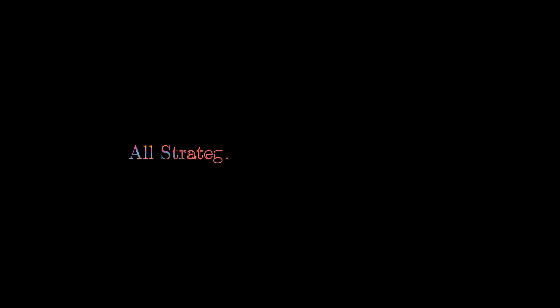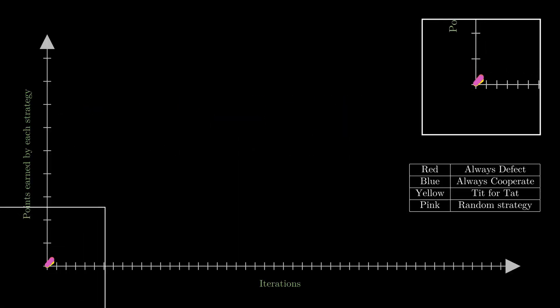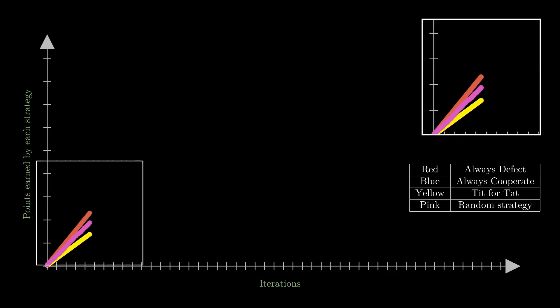If you pit all other strategies individually against always cooperate strategy, tit for tat strategy will be indistinguishable from always cooperate strategy. So the blue curve and yellow curve overlap each other. Of course, always defect strategy takes the show once again because it gains a lot of points by just defecting.